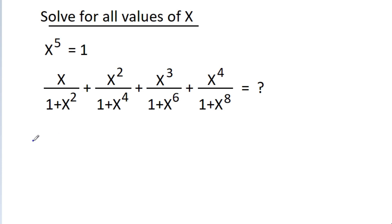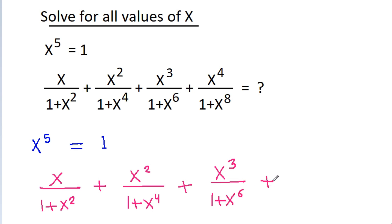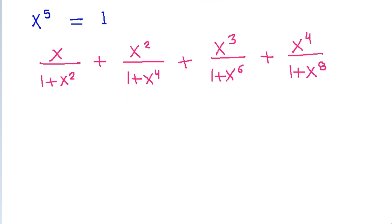We have given that x power 5 is equal to 1. Now we cannot just put x equal to 1 because there will be 5 solutions of x power 5 equal to 1, and we have to sum for all values of x. So x is not equal to 0.